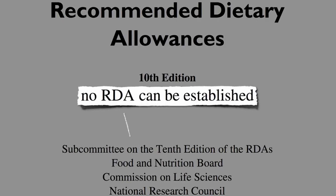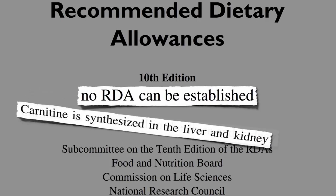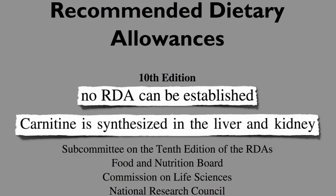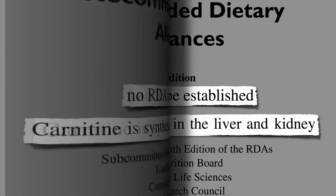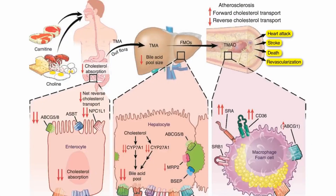The problem is that the bodies of other animals also make all the carnitine that they need. So when we eat them, their carnitine can end up in our gut for those bacteria to feast upon, resulting in TMAO. Some animals make more than others — carnitine is concentrated in red meat.